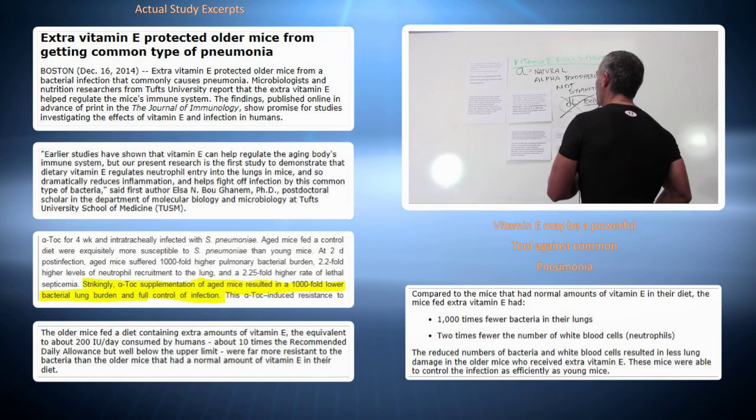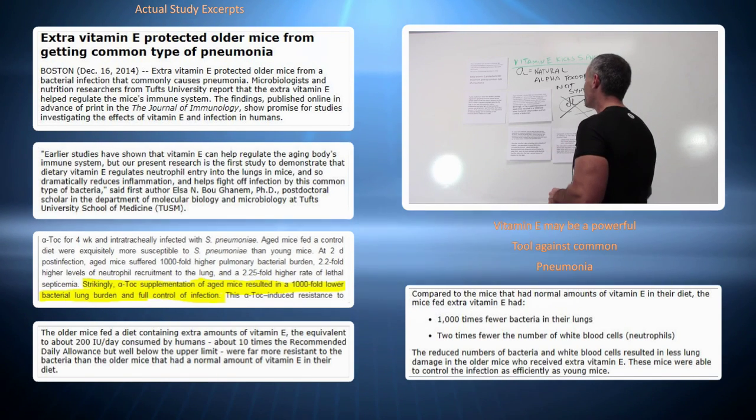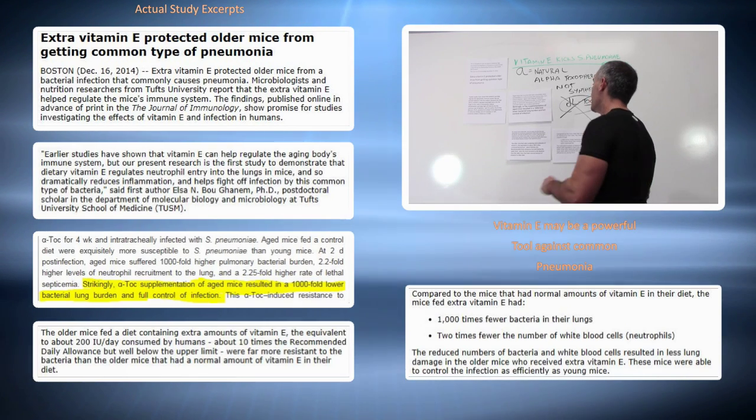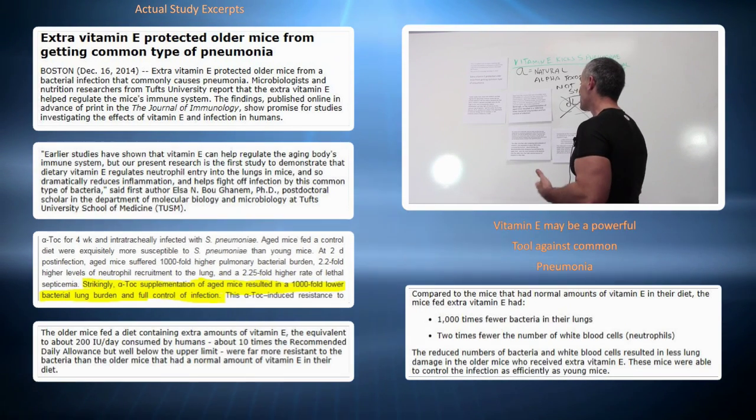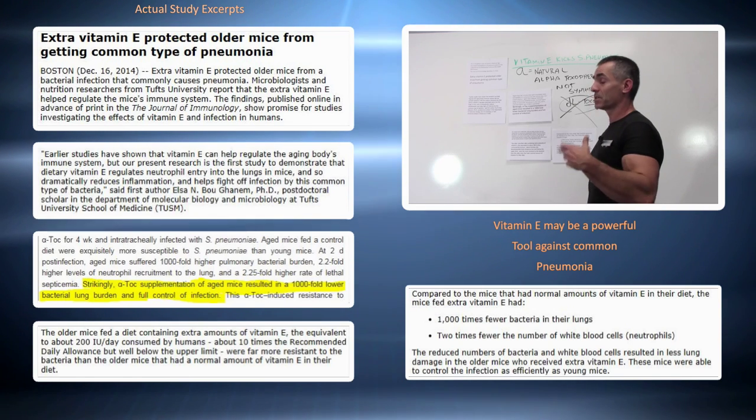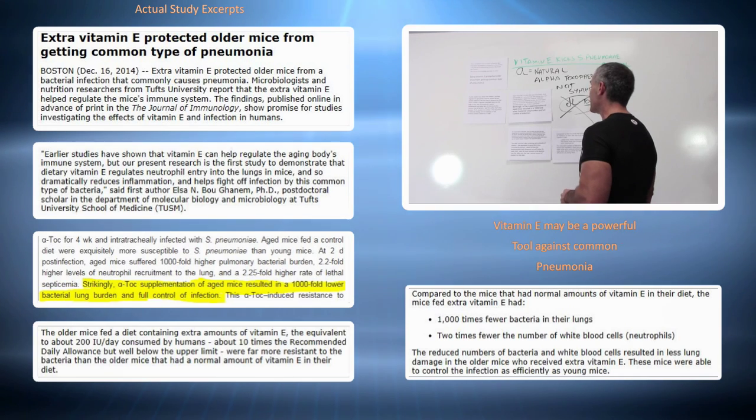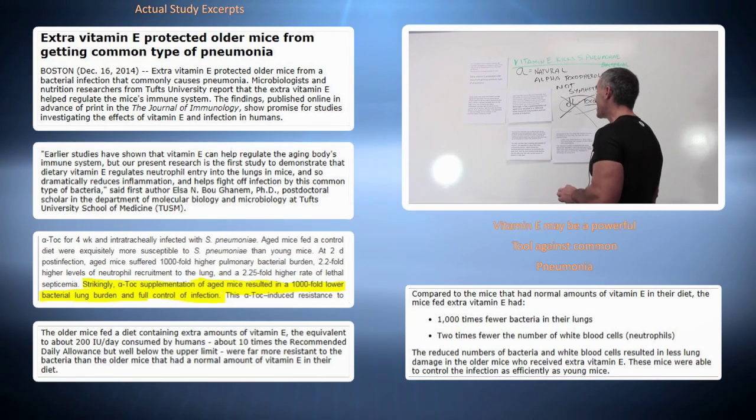Now to proceed forward. The older mice fed a diet containing extra amounts of vitamin E, the equivalent of about 200 IUs a day of natural vitamin E consumed by humans, or about 10 times the recommended daily allowance but well below the upper limit, were far more resistant to the bacteria than older mice that had a normal amount of vitamin E in their diet.